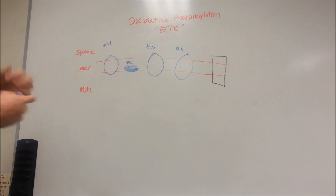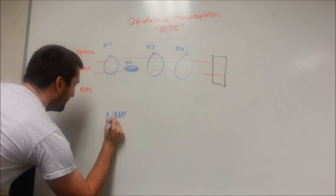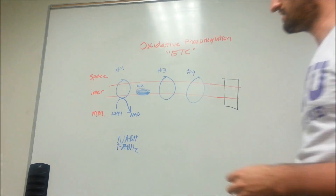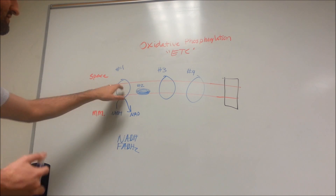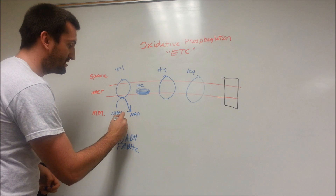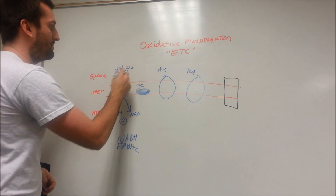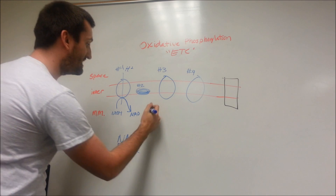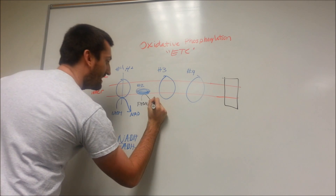The TCA cycle is cranking out NADH and FADH2. NADH feeds into Complex I — it donates its electrons, and Complex I takes a hydrogen ion from the mitochondrial matrix and shoves it up through the pore into the intermembrane space. FADH2 feeds into Complex II and gets converted back into FAD. Importantly, Complex II does not pump a hydrogen ion across the membrane.